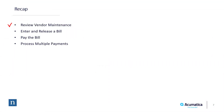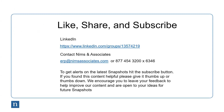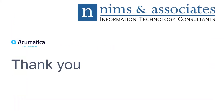To recap: the first thing we did was review vendor maintenance and the settings that affect how payments are processed for that particular vendor. We also entered and released the bill and talked about the statuses as bills are released and paid. We showed how to pay one bill at a time, and then how to process multiple payments. Please subscribe to our channels. You can find us on LinkedIn, contact us directly at NIMS & Associates at erp@nimsassociates.com, or call the number on your screen. Thank you again for your time and attention.